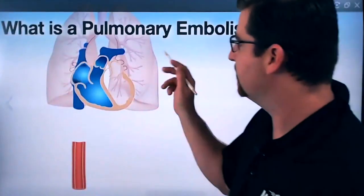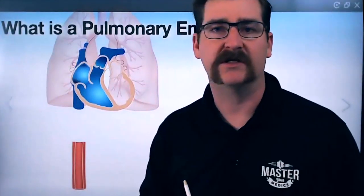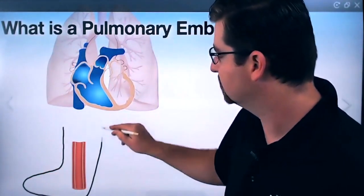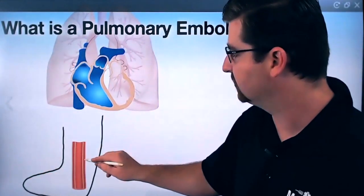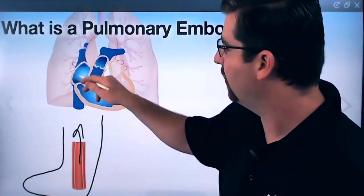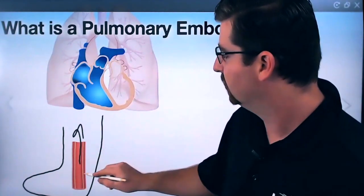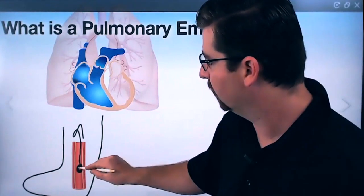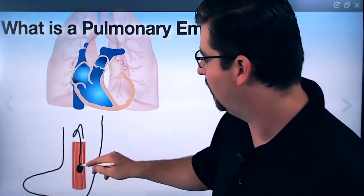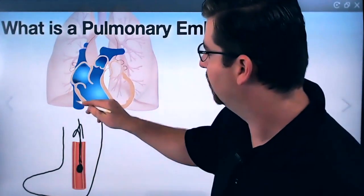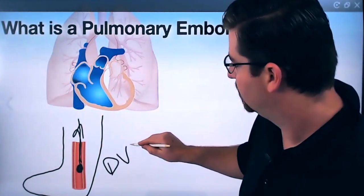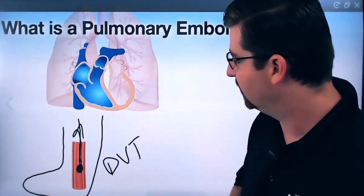So what exactly is a pulmonary embolism? In your lungs, you have some large vessels, and those vessels — the veins — are returning blood back up to the heart. So if we develop a clot down here and that clot breaks free, that clot will travel up into the heart. This clot down here is called a deep venous thrombosis.